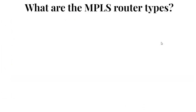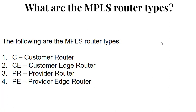Question 3: What are the MPLS router types? Answer: MPLS routers are categorized into four types. 1. C, which stands for Customer Router. 2. CE, which stands for Customer Edge Router. 3. PR, which stands for Provider Router. 4. PE, which stands for Provider Edge Router.